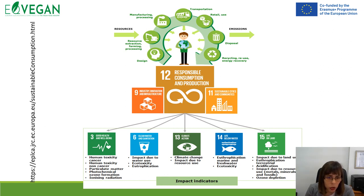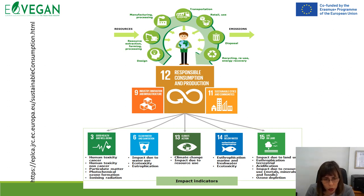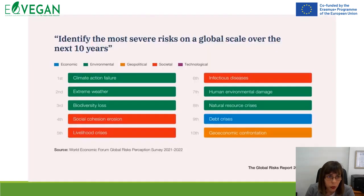We have different indicators within those sustainable development goals. Under related SDGs, we also have good health and wellbeing, clean water and sanitation, climate action, life below water, and life on land. So we need to think about different kinds of impact to health, the environment, water, climate change, land use, resource use, metals, minerals, and ozone depletion — identifying the most severe risks on a global scale over the next 10 years.